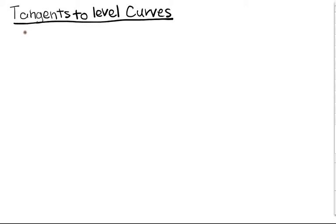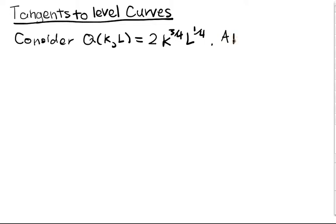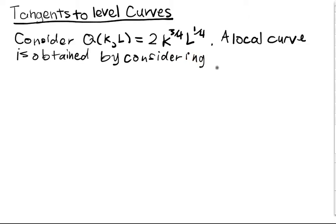In this video, we're going to talk about tangents to level curves. Our example is going to be the Cobb-Douglas production function. Consider Q(K,L) = 2K^(3/4)L^(1/4). A level curve is obtained by considering a particular value for this function. So we set this function in terms of K and L equal to 100, and this defines a level curve.